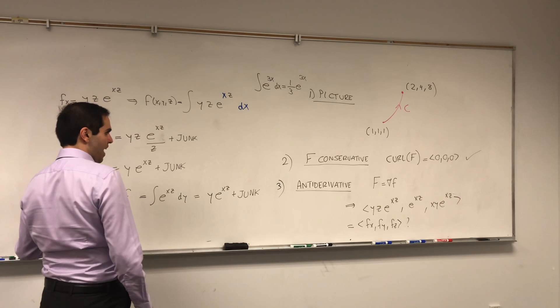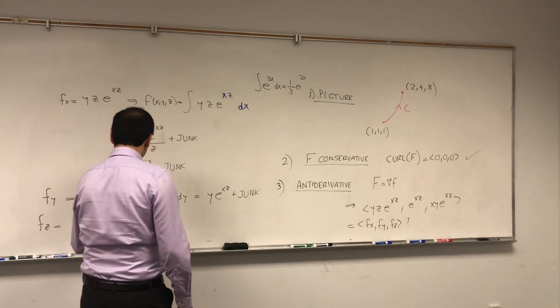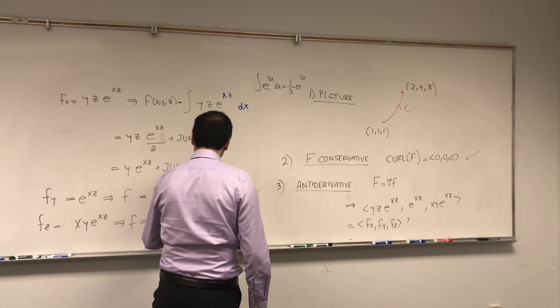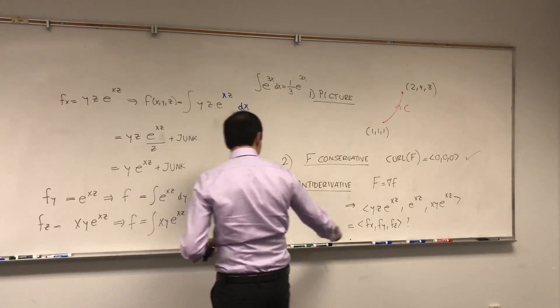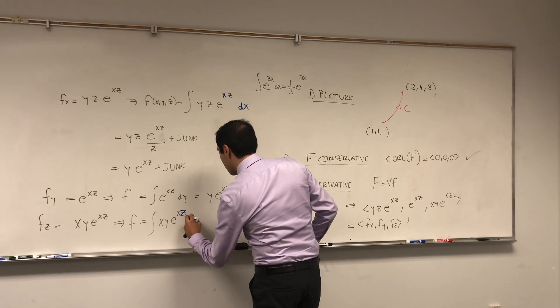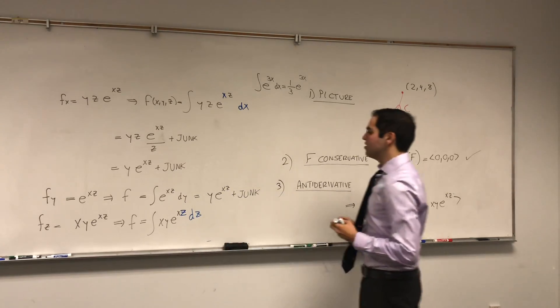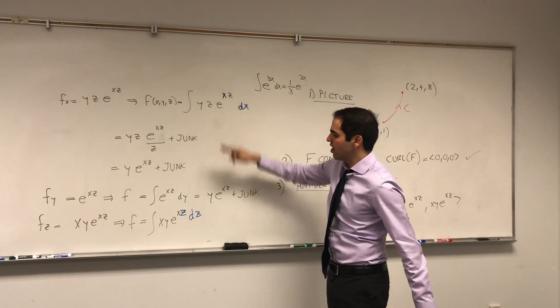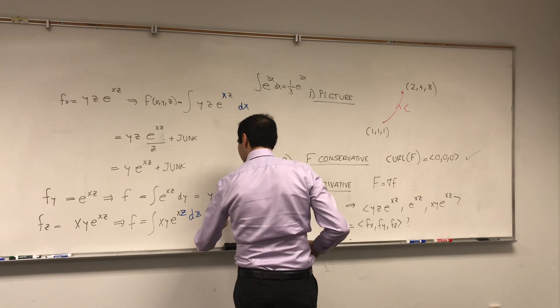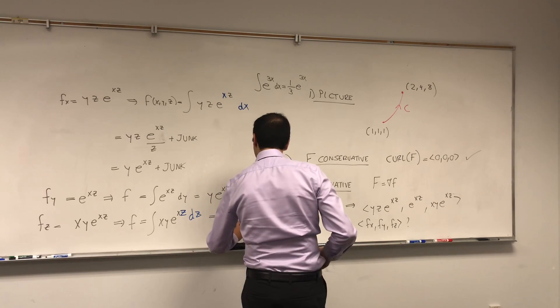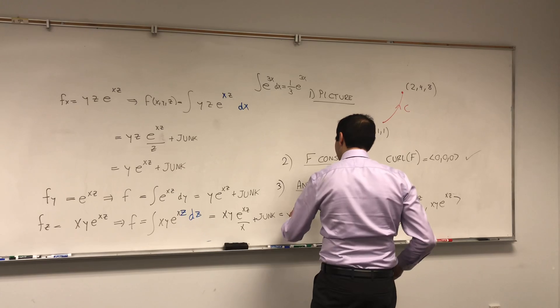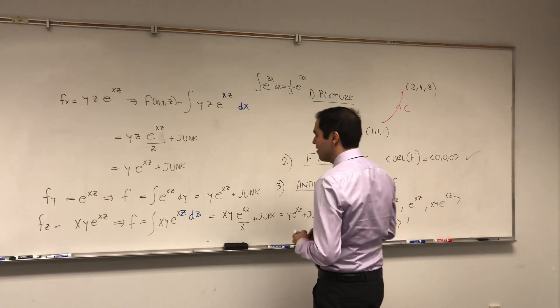That tells you f is the integral of e to the xz with respect to y. This is constant with respect to y, so it becomes y e to the xz plus some chunk. So you may already guess what f is, but let's just use fz just to check as well. So it becomes fz is xy e to the xz, which tells you that f is the integral of xy e to the xz with respect to z. So in this case, our variable is z. So in other words, before we divided by z because z was constant, now we divide by x because x is constant. So we get xy e to the xz divided by x plus some chunk. And that becomes y e to the xz plus some chunk.